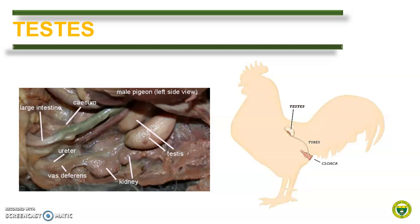In birds, the paired testis are located within the coelomic cavity, situated on the left and right sides of the body, occupying a dorsal position near the cranial renal division and the abdominal air sac. Testicular descent does not occur in birds. The size and development of the testis vary considerably with season, climatic factors, age, and breed. During the breeding season, the volume of the testis increases substantially.